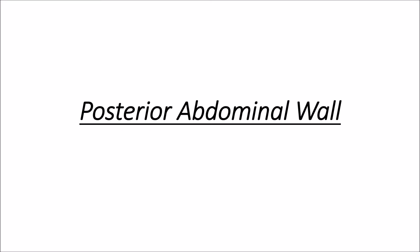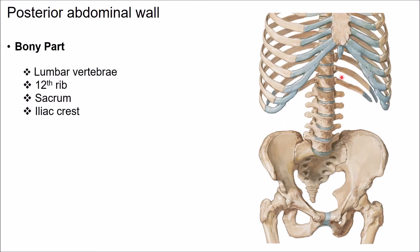Hello students. The topic for today's discussion is the posterior abdominal wall. The posterior abdominal wall extends from the last rib to the pelvic brim. It is composed of a bony part and a muscular part.